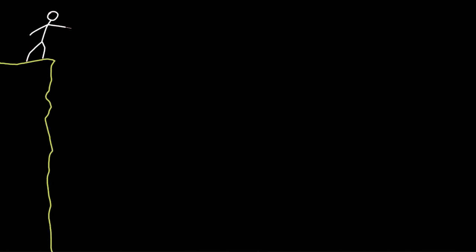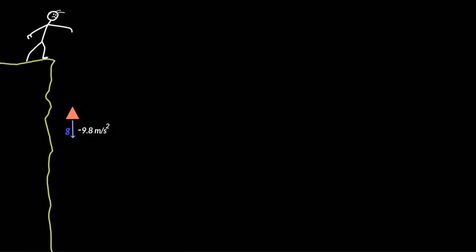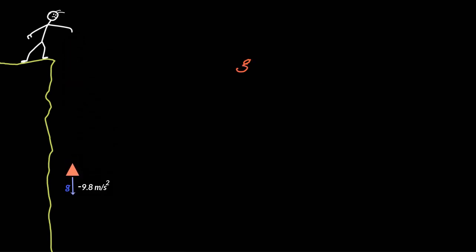Can you visualize what really happens to the kinematics of an object falling under the force of gravity? An interesting way to visualize this is to write the value of g — that is 9.8 meters per second squared — as 9.8 meters per second per second.